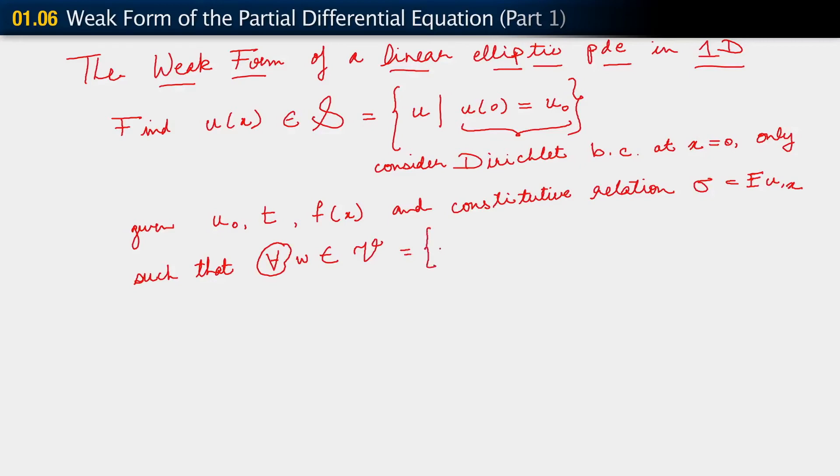So v consists of all functions w such that w at 0 equals 0. So w also satisfies a Dirichlet boundary condition except that it is homogeneous. It is a homogeneous Dirichlet boundary condition.